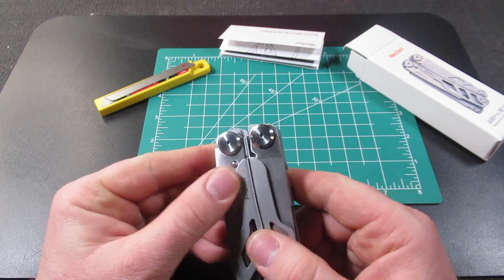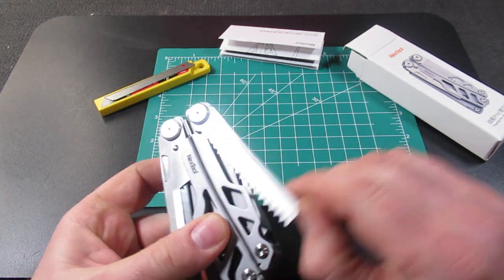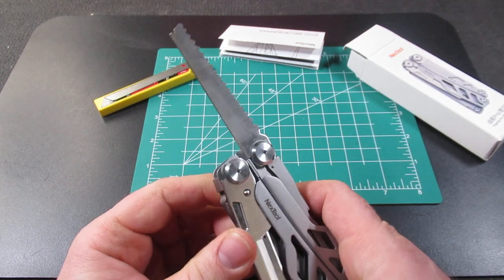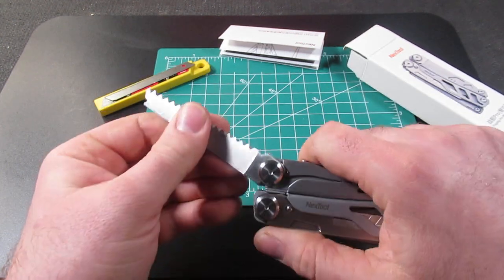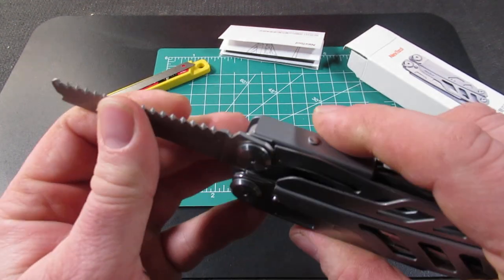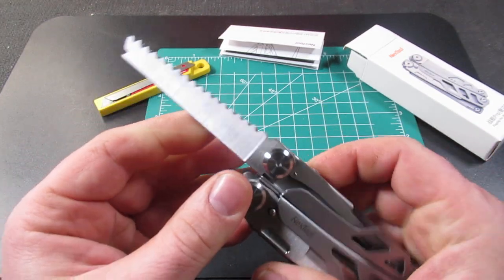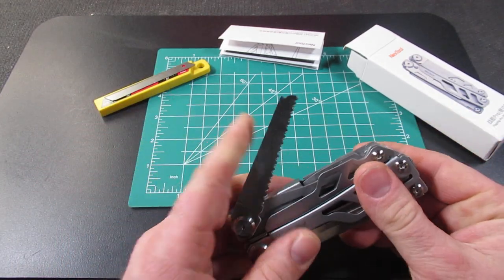On the outside, you do have on this model, the replaceable knife. And then you also have the saw. Now on my model, I have to overextend the tool for the lock to slip into place. And then it is locked into place like so.